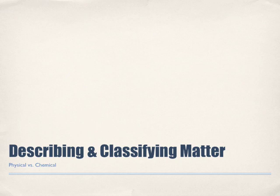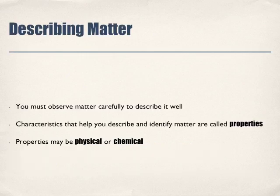We're going to be looking at describing matter in terms of its physical and chemical properties. You must observe matter carefully to describe it well. Characteristics that help you describe and identify matter are called properties. Properties can be either physical or chemical.